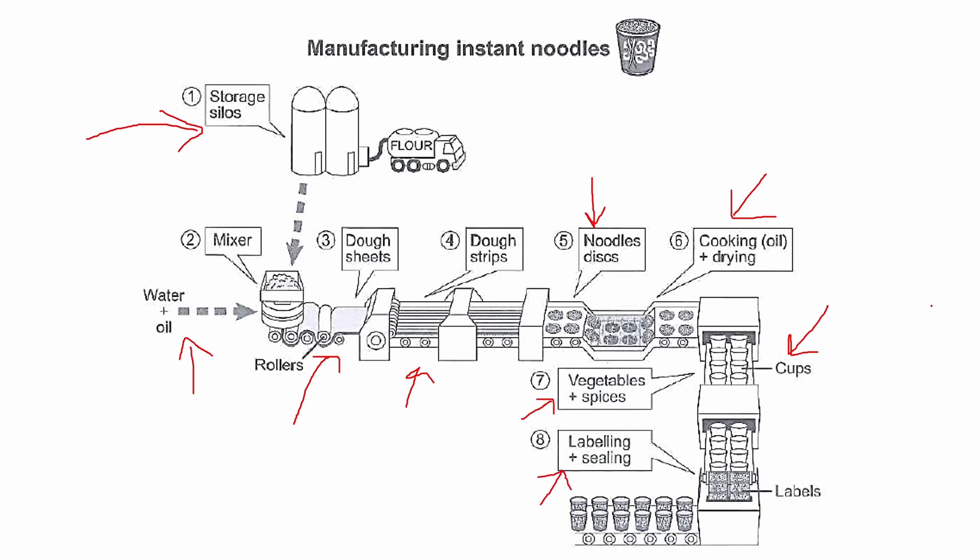So for the overview, as you know, for process writing, we mention the number of steps. So here we have eight steps or stages, and also the beginning and the ending points. But we need to also be specific. So we can group these stages into three and mention them as the main steps in the overview.